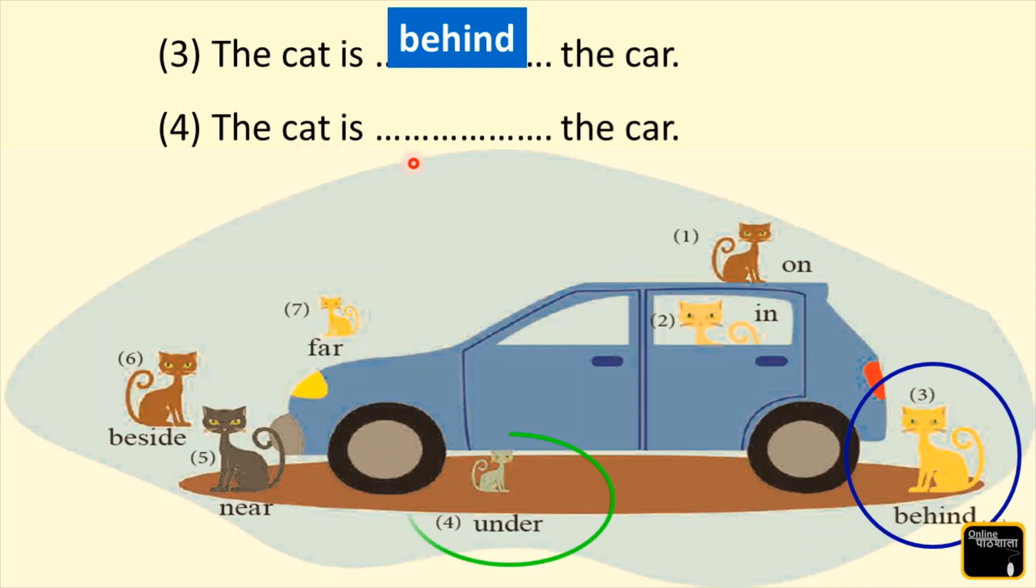Question 4: The cat is ___ the car. Where is the fourth number cat? Yes, here it is. This cat is sitting under the car. It means the cat is under the car. So we are going to write here 'under'.